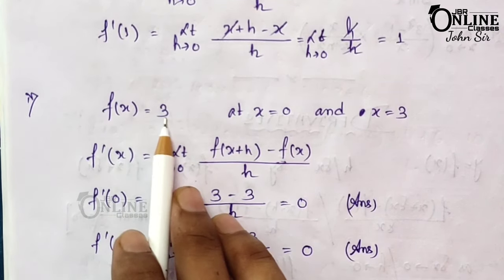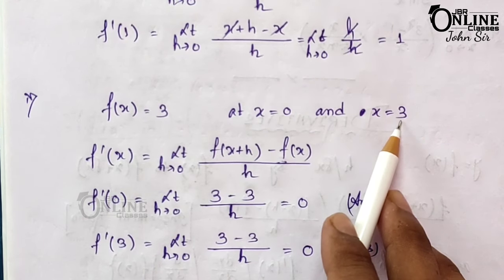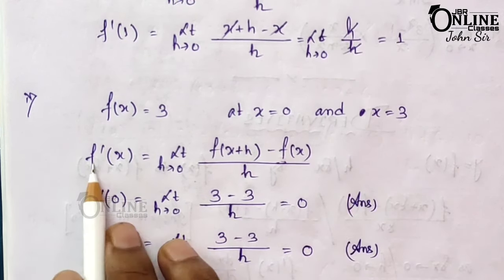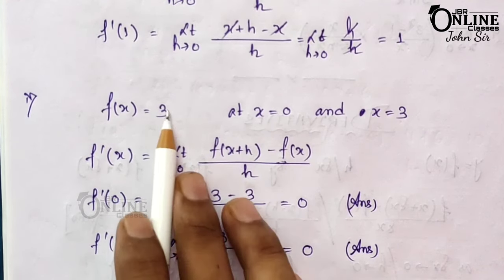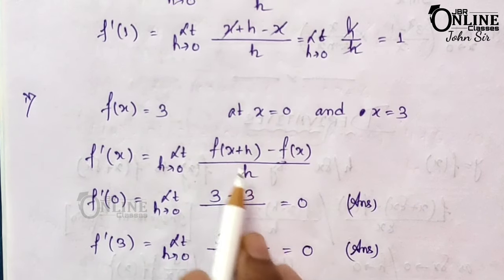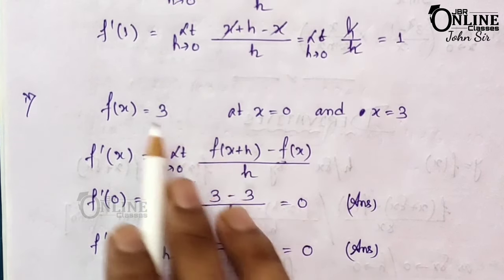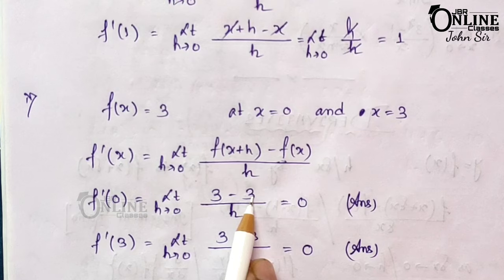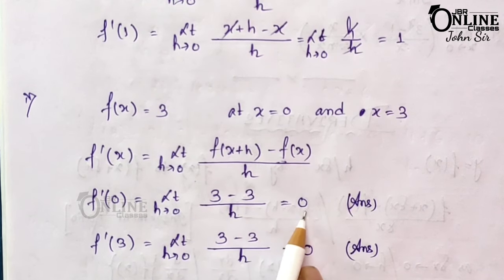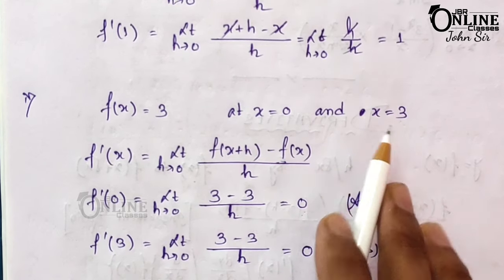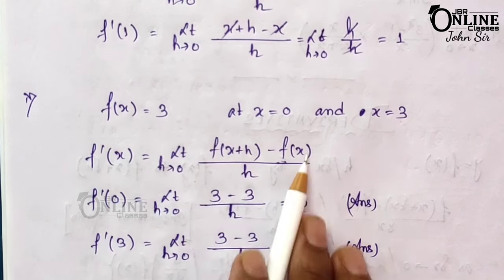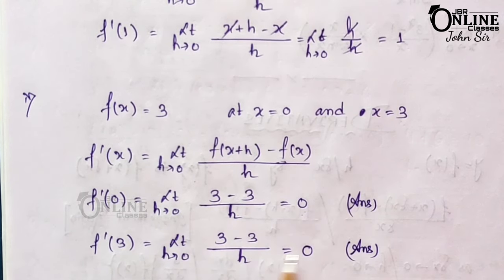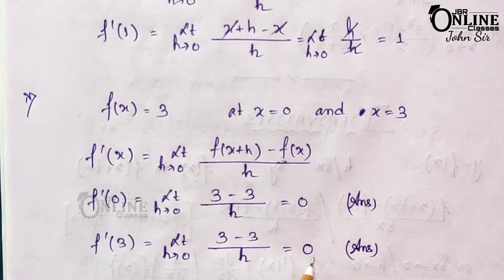Fourth: f(x) = 3 at x = 0 and x = 3. Here f'(x) = limit h→0 of [f(x+h) - f(x)] / h. As there is no x, f(x+h) = 3 and f(x) = 3, so 3 - 3 = 0 by h, which equals 0. Therefore f'(0) = 0. Similarly at x = 3, f(x+h) = 3 and f(x) = 3, so f'(3) = 0.